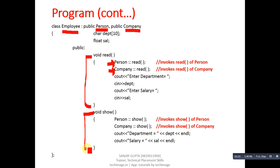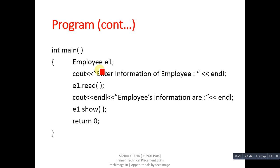The show function will first call the show function of Person class, then the show function of Company class, then department and salary will be displayed on the console. You can see that the derived class is linked with base classes with the help of scope resolution. Now in the main function, an object is created which is of Employee class.